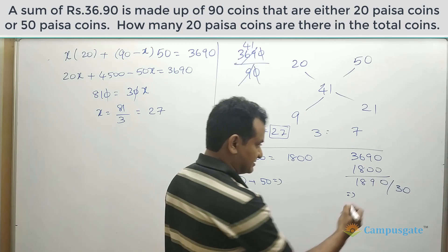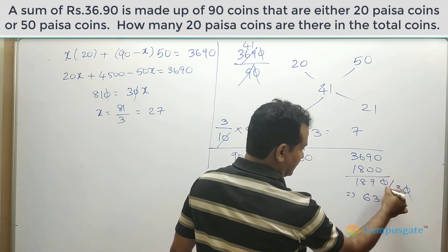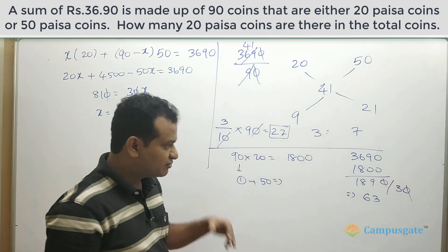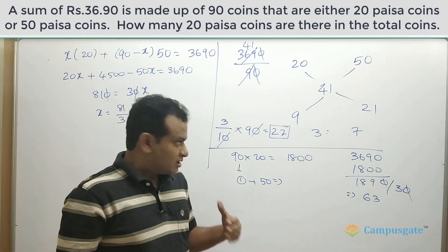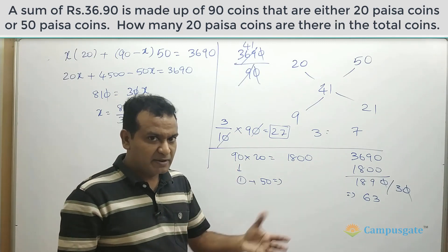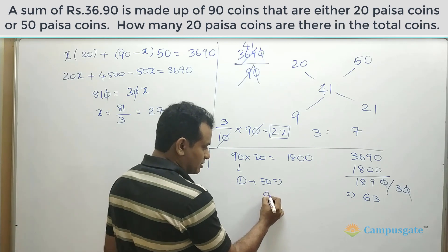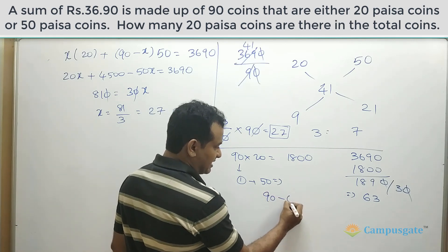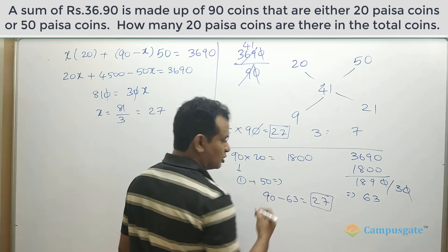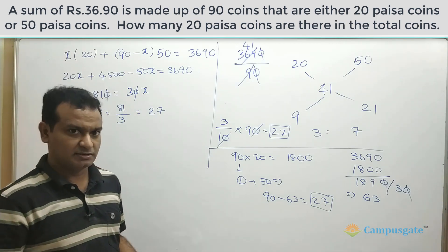1890 divided by 30 gives 63, so we need to replace 63 coins with 50 paisa coins. Out of 90 coins, 90 minus 63 gives 27. So there are 27 twenty-paisa coins. This is the logical way of solving this question.